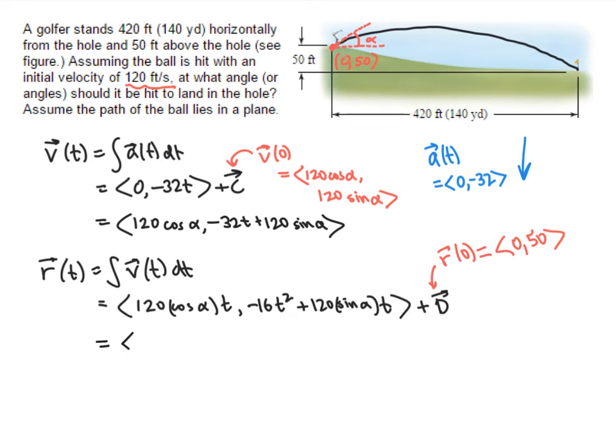So my final formula for my position vector is 120 cosine alpha t, negative 16t squared, plus 120 sine alpha t, plus 50.